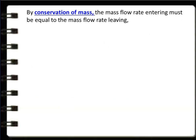By conservation of mass, the mass flow rate entering must equal the mass flow rate leaving the system, so M1 = M2. From the continuity equation, M = (A × V) / v, giving A1·V1 / v1 = A2·V2 / v2, where capital A is area, capital V is velocity, and small v is specific volume.